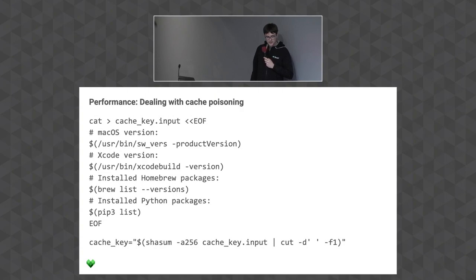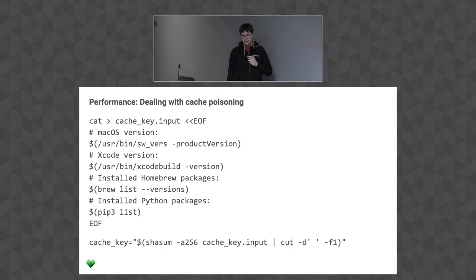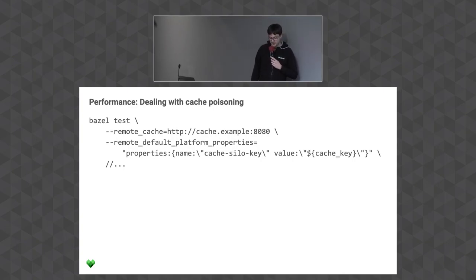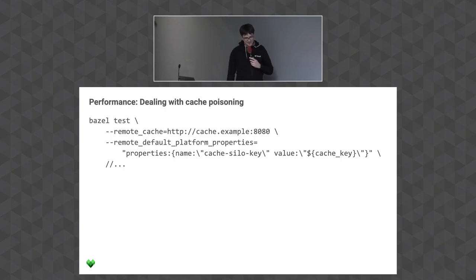Build a cache key — put everything that might influence your build, except what's already in the Bazel action key, hash it, and then use the --remote_default_platform_properties flag. This is a protobuf so make sure to type it exactly as shown — not a single extra whitespace, and double quotes not single quotes. We might eventually want to make this more user-friendly, but this works and gives you a correct cache.